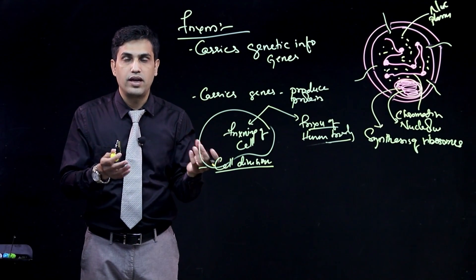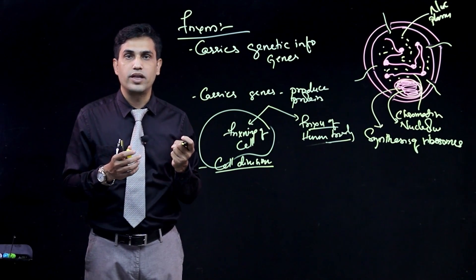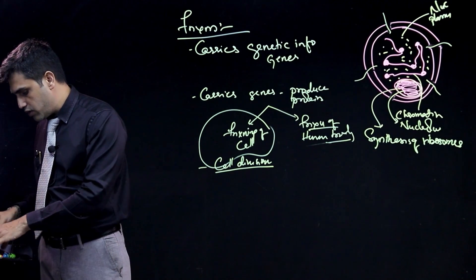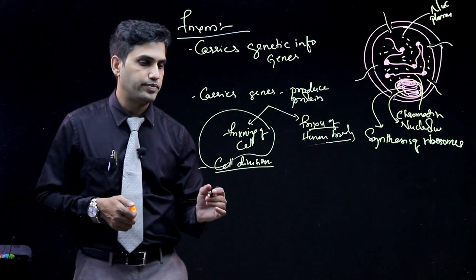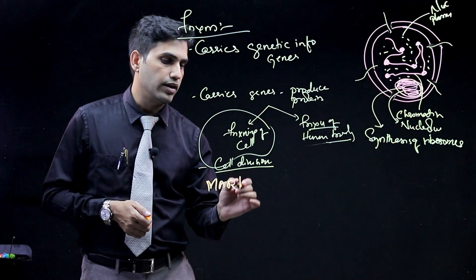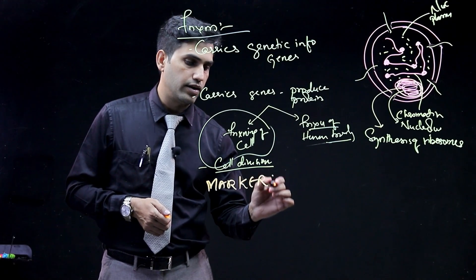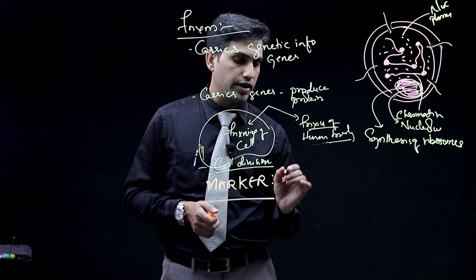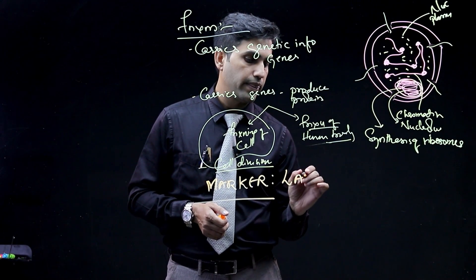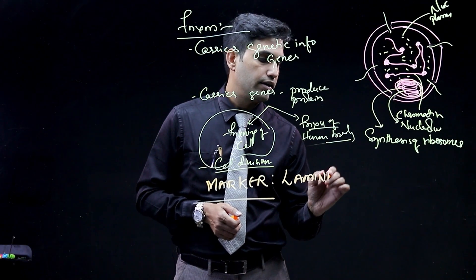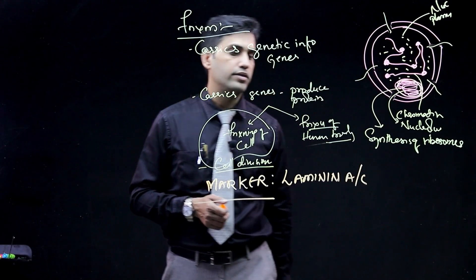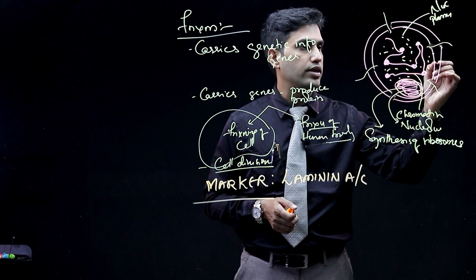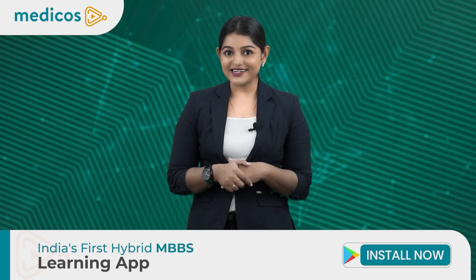Now suppose you are having a sample of cells and you need to identify the nucleus. So how do we identify the nucleus? We identify the nucleus using a marker. What is the marker? The marker for nucleus is laminin A and C. This laminin A and C, it is present in the nuclear membrane.